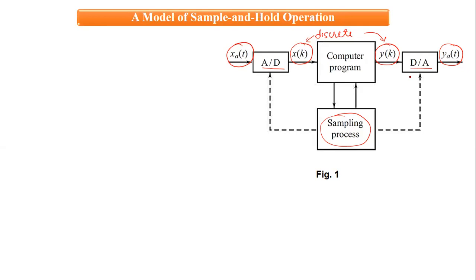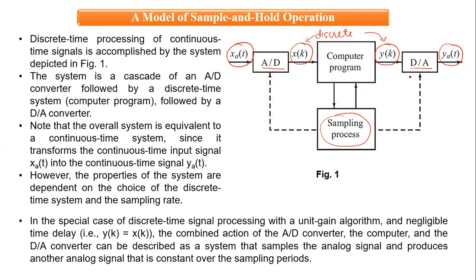When a signal is sampled and converted, that sample is converted back to analog. The previous sample has to be held so that once the conversion is completed, the next sample is taken. This is the whole theory basically related to this concept.